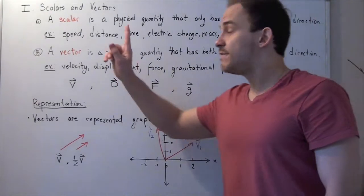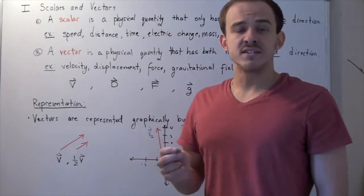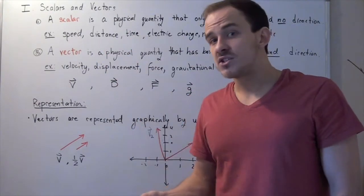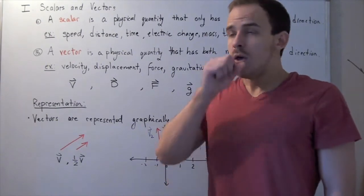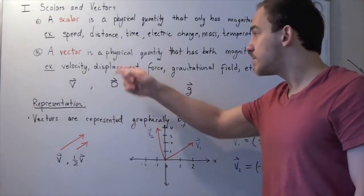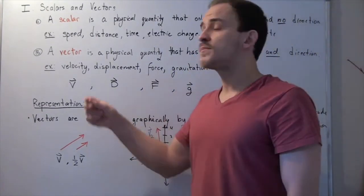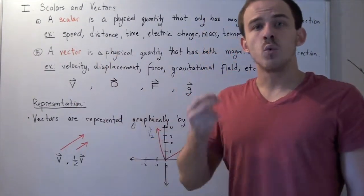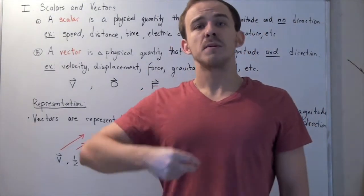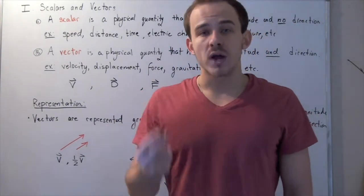Now, a vector is a physical quantity that has both magnitude and direction. For example, velocity, displacement, force, gravitational field—all these are vectors. They are physical quantities that describe both magnitude and direction.